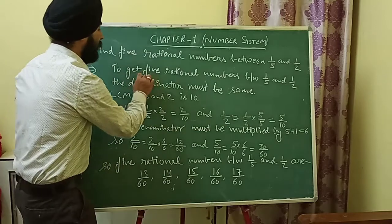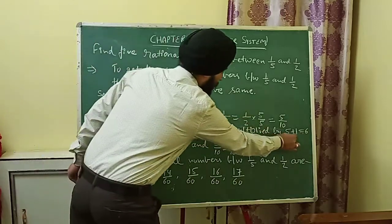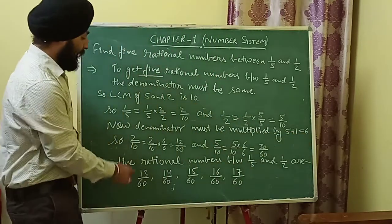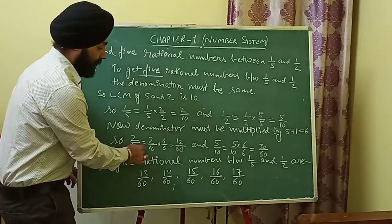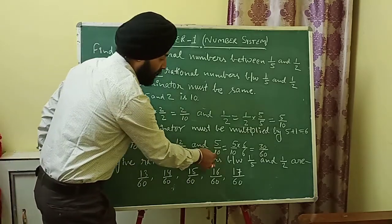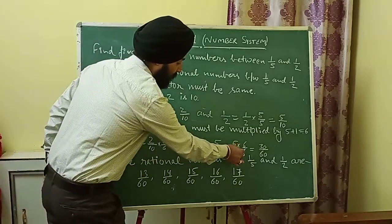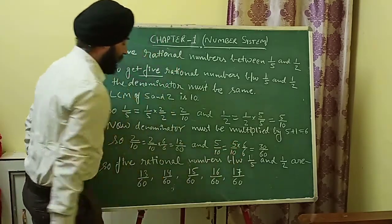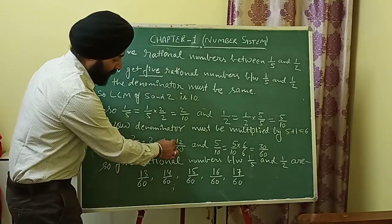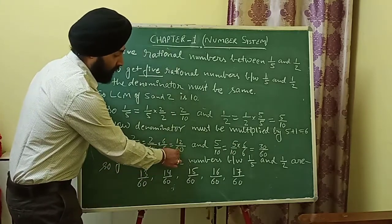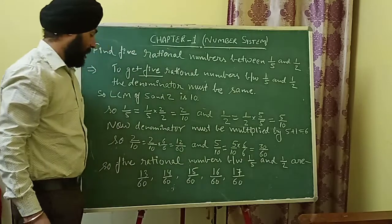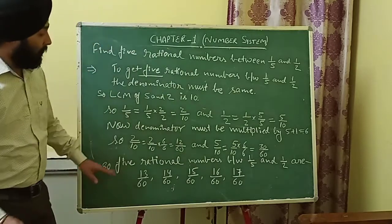Since we need five rational numbers, the denominator must be multiplied by five plus one, that is six. So 2/10 becomes 12/60 and 5/10 becomes 30/60 after multiplying numerator and denominator by 6.